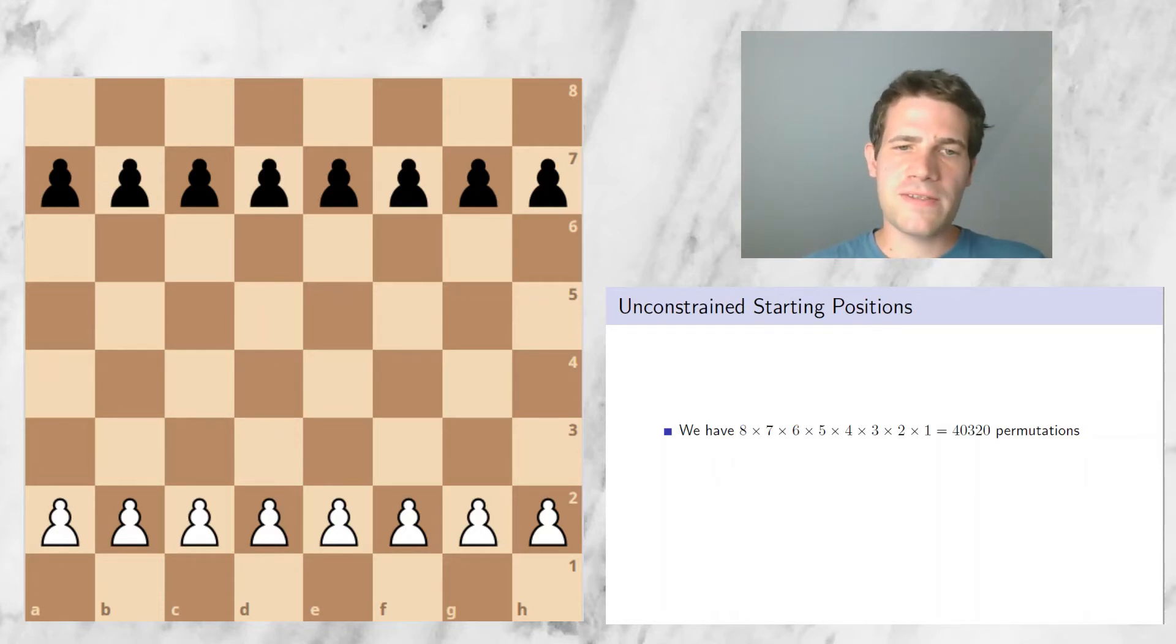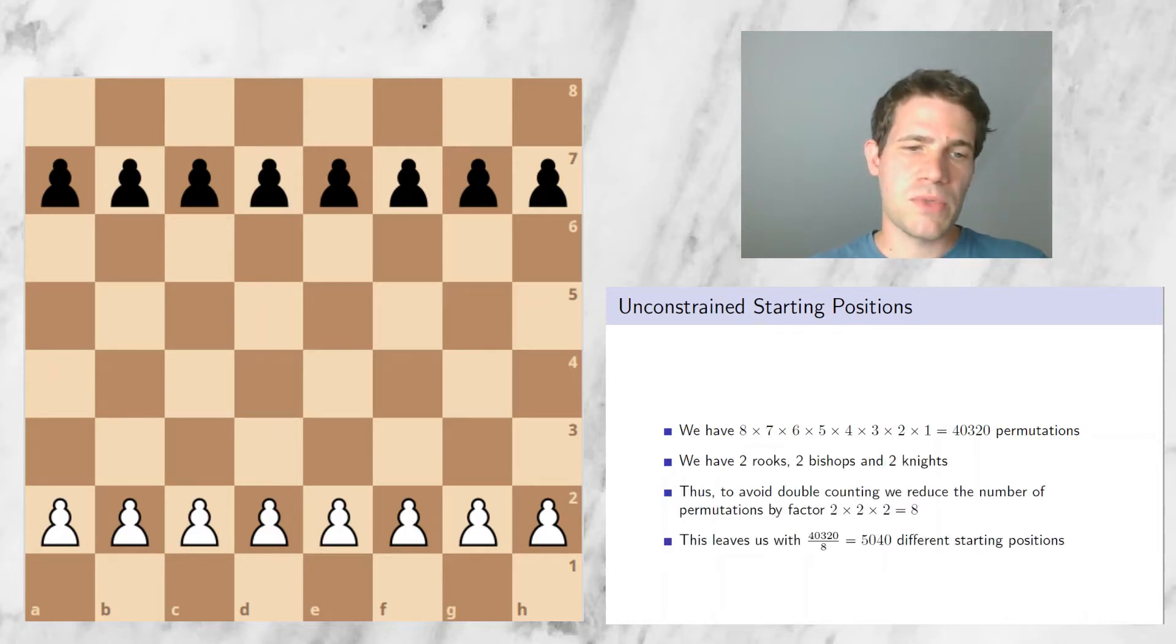This would be the answer if we had no constraints and no two pieces would be equal. However, in chess, we have a couple of pieces which are the same. In particular, we have two rooks, two bishops, and two knights. The position in which I put rook number one on square A1 and rook number two on square H1 is the same position as if I were to put rook number two on A1 and rook number one on H1. Therefore, I have to divide these 40,320 positions by two to take into account the fact that we have two different rooks. I double count them when I do the permutations. The same is true for the bishops.